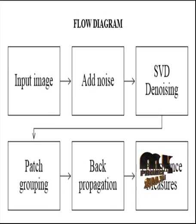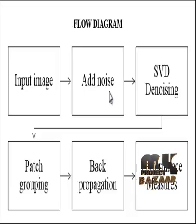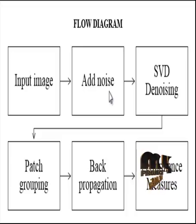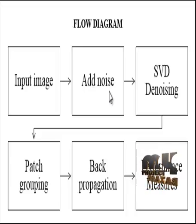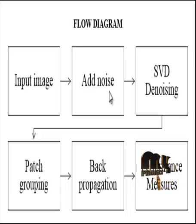Let us see the flow of the process. The input image is obtained from the dataset. First, we add additive white Gaussian noise to the input images. Additive white Gaussian noise is added uniformly to all the pixels of the input images. A Gaussian distribution function is employed for generating the unwanted pixel information, and the generated Gaussian distribution values are added uniformly over the complete image.